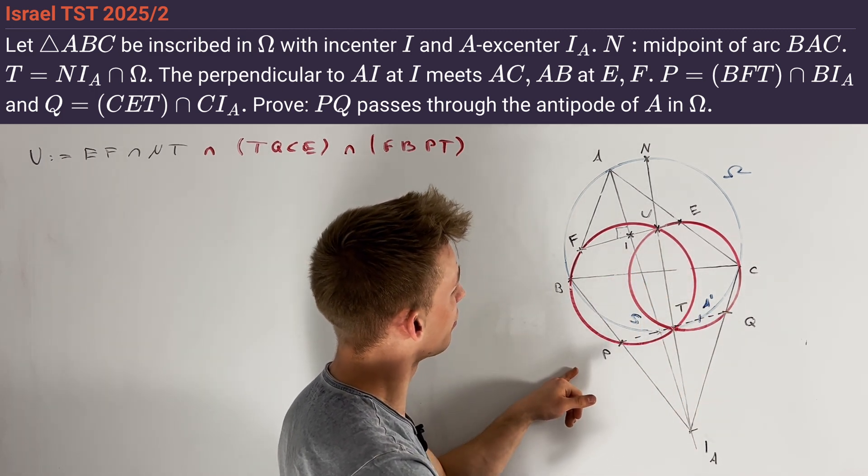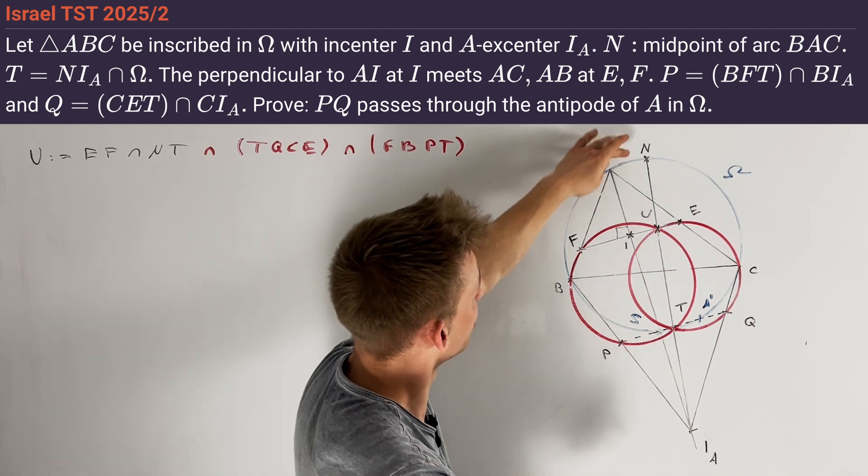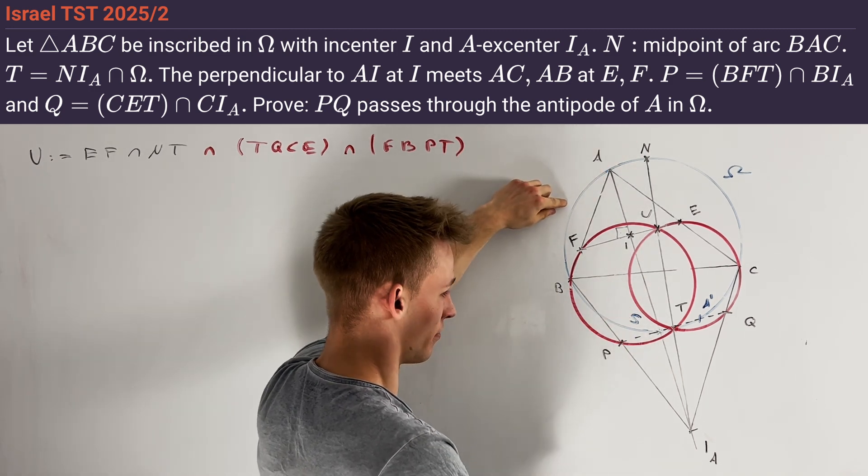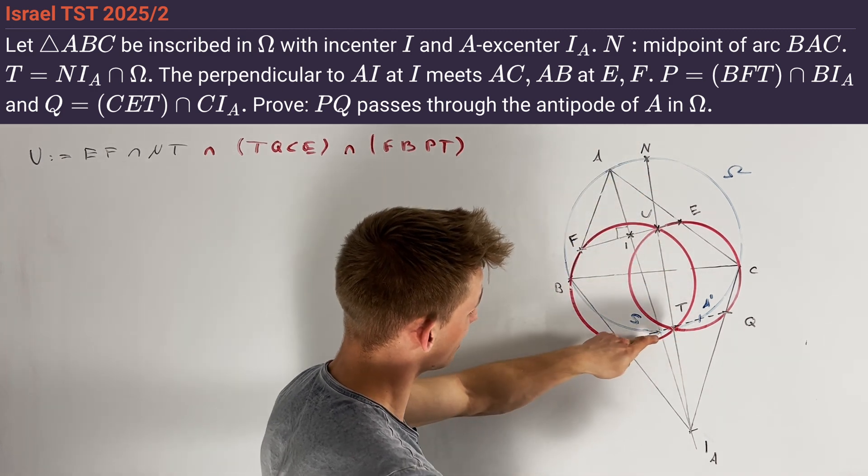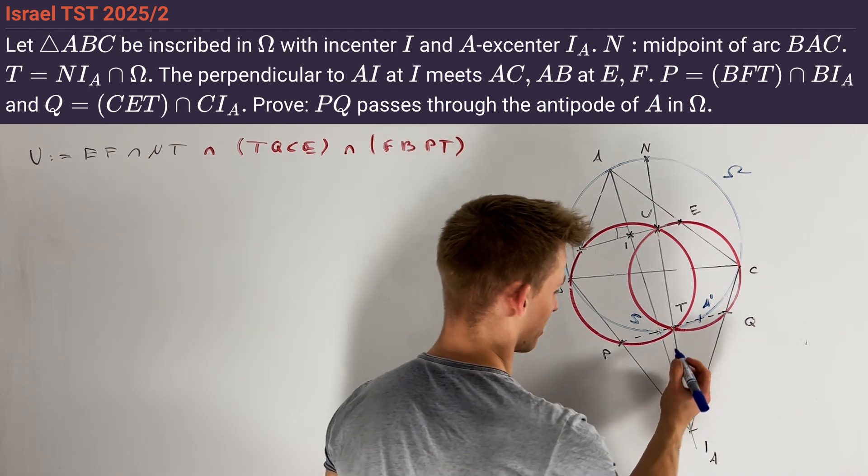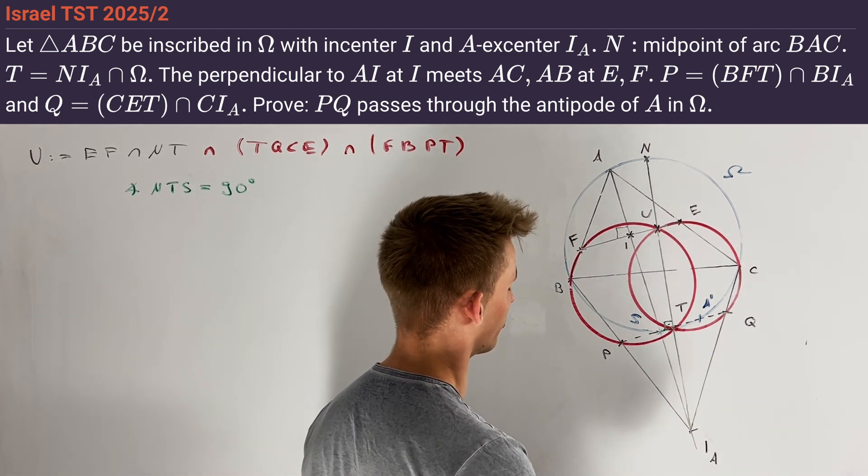And in this configuration, we have one more property: namely, S is the point opposite to N on Ω. The last thing especially implies that the angle NTS is equal to 90 degrees. We can see that this immediately gives us our next cyclic quadrilateral.